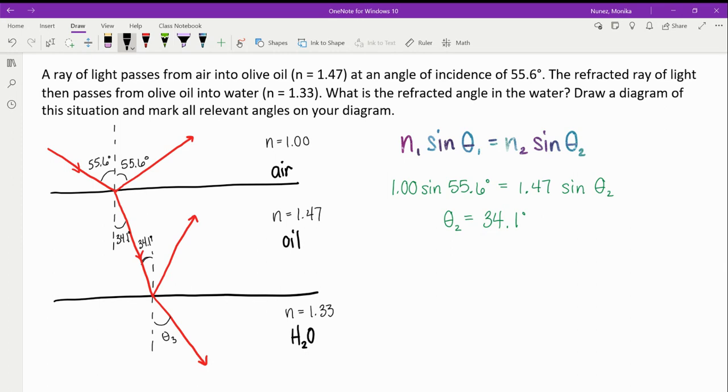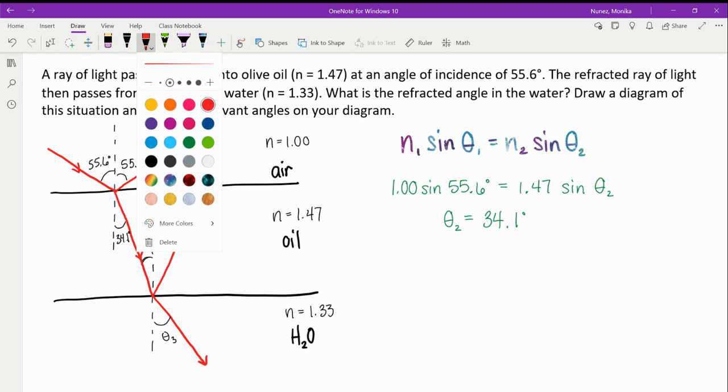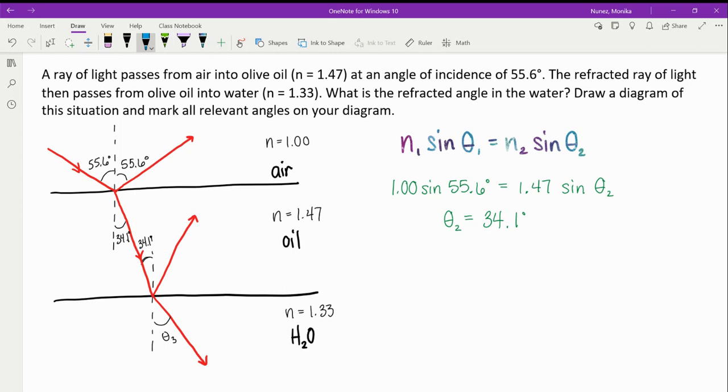Now it's a good time to stop and do a quick check to see if that answer makes sense. We said that when we went from air into oil, that light should bend toward the normal. So theta 2 should be less than theta 1. And that's what we found as we did the math. So that's a good indicator we've done the math correctly.